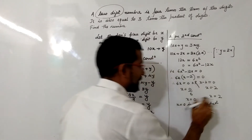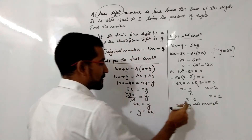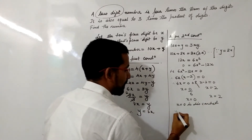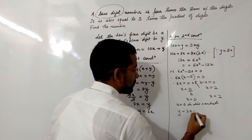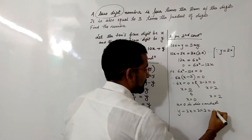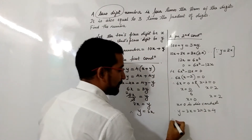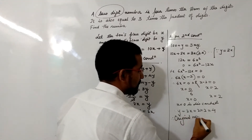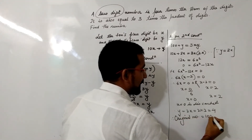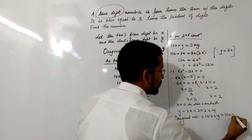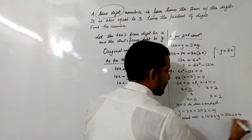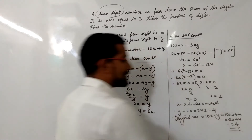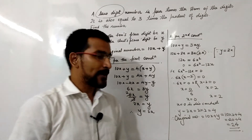We still need the value of y. Since y = 2x and x = 2, we get y = 2 × 2 = 4. Therefore, the original number = 10x + y = 10 × 2 + 4 = 20 + 4 = 24. The two-digit number is 24.